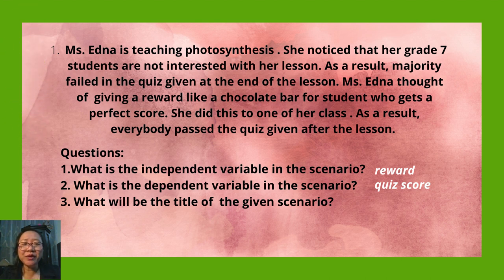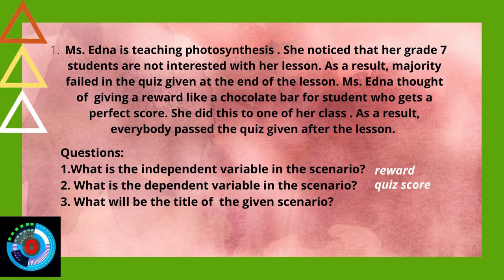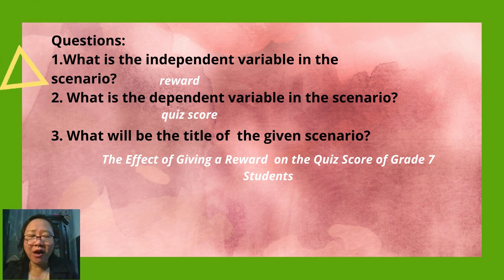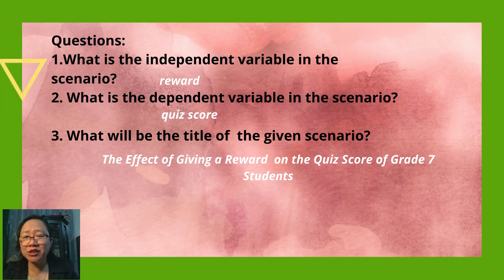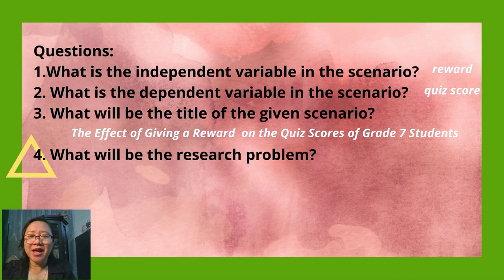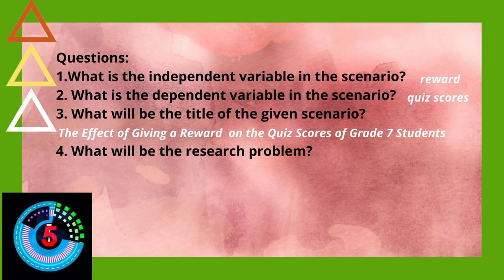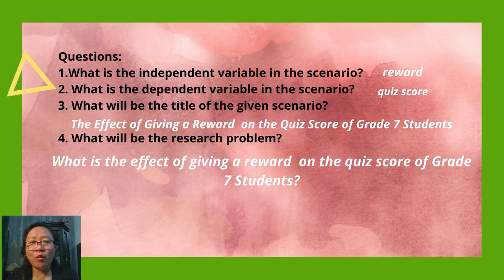Question three: What will be the title of the given scenario? Since the independent variable is reward and the dependent variable is quiz score, using our general formula — the effect of independent variable on dependent variable — we can now formulate our title: The Effect of Giving Reward on the Quiz Scores of Grade 7 Students. Question four: What will be the research problem? The research problem will be: What is the effect of giving reward on the quiz score of Grade 7 students?